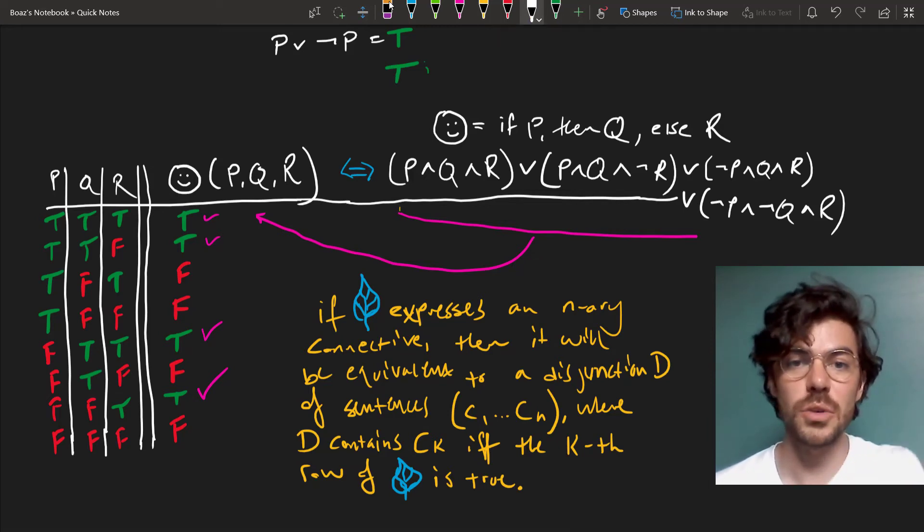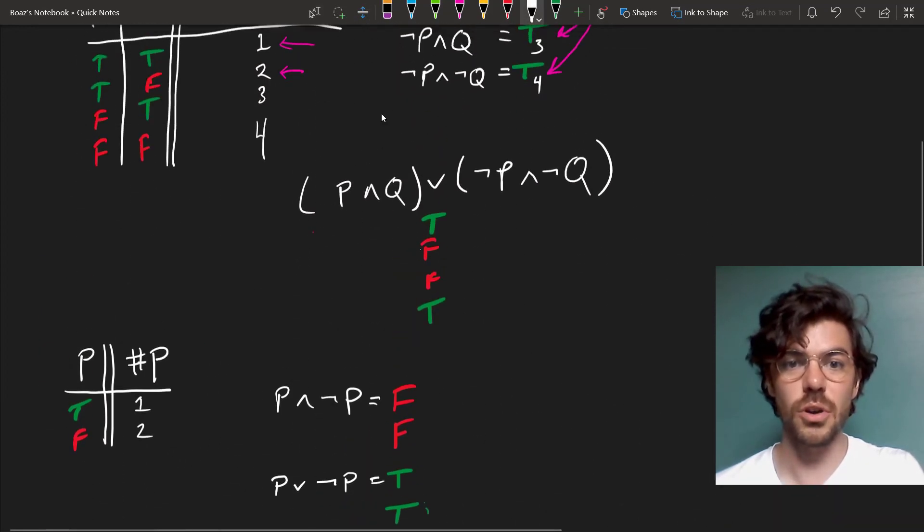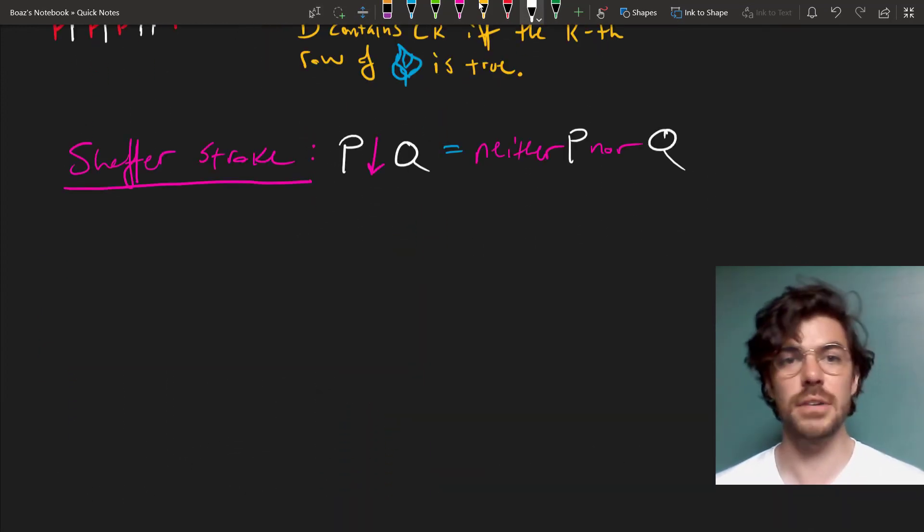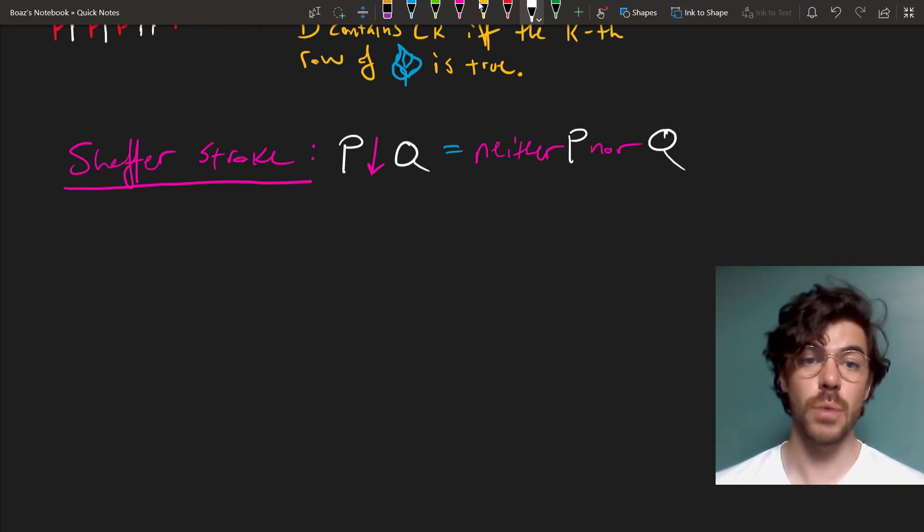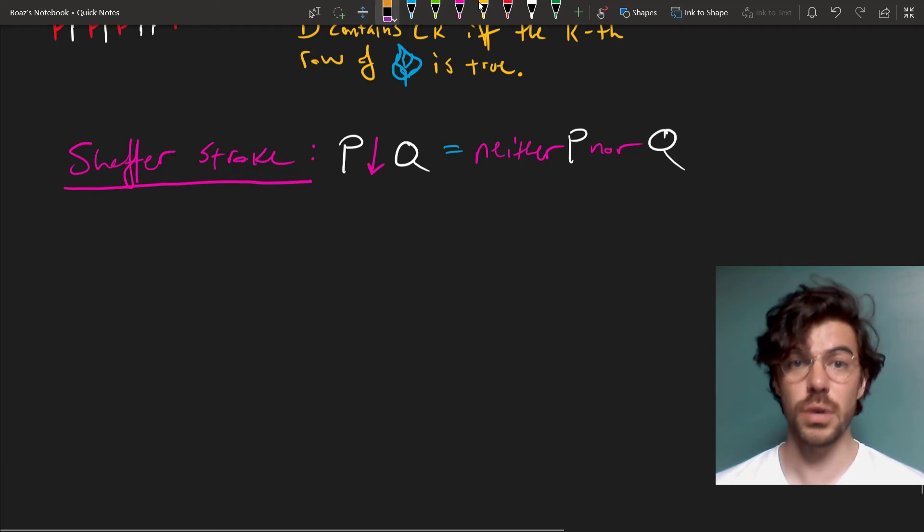I want to end on something really cool that for me was really exciting when I first found it, which is the so-called Sheffer stroke, which we represent here as a binary connective, a downward arrow between p and q that symbolizes neither p nor q. And, what do you know, the Sheffer stroke is actually complete.